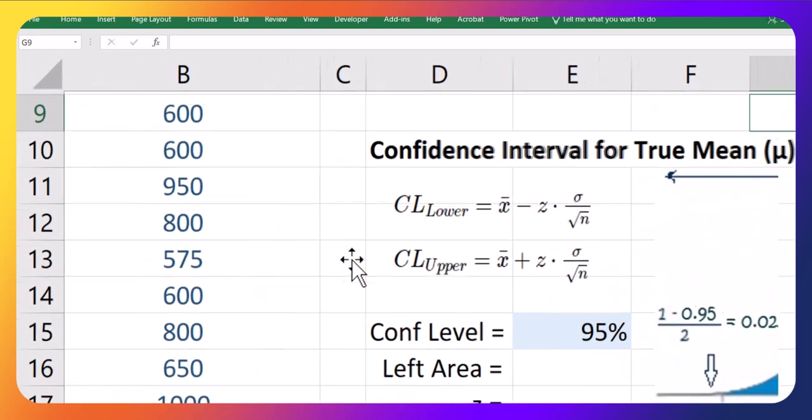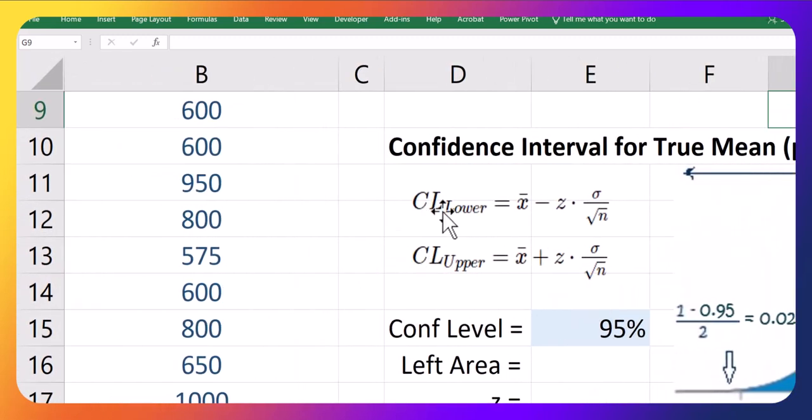So the formula is the following. The lower limit is the sample mean minus the z-score times the population standard deviation divided by the root of the sample size. And the upper limit is just almost that same thing, but we just add the second piece. This second piece is also called the margin of error. I will speak more to that later as well.